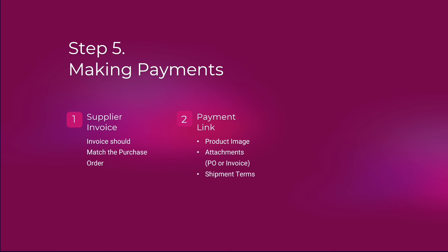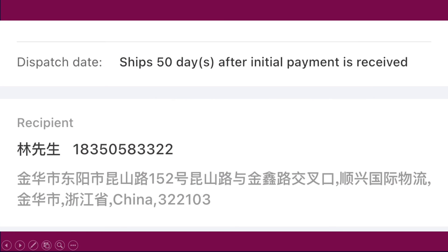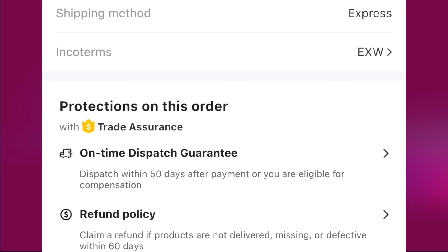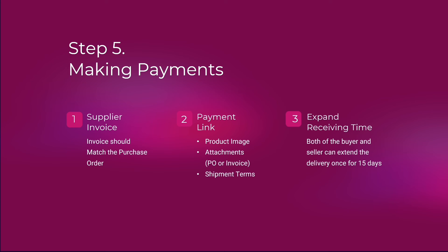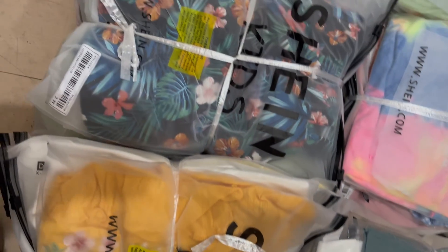Also review the shipment terms under the payment link — double check that the delivery timeline is correct based on what you agreed, and verify the shipping address. As part of my practice, after paying my supplier on Alibaba, I extend the receiving time. Both buyer and seller can extend the delivery once for 15 days. I do this to get an extra 15 days before the trade assurance protection period, which protects your order for 30 days, so the extension gives you additional buffer time.